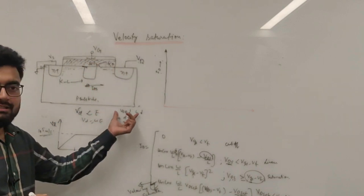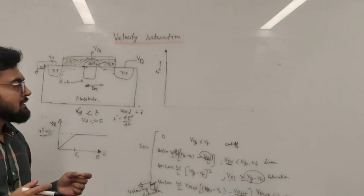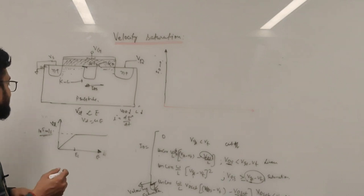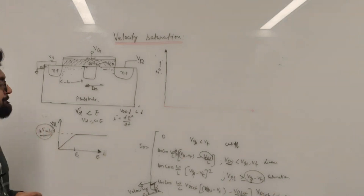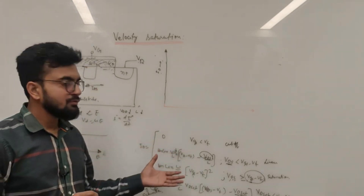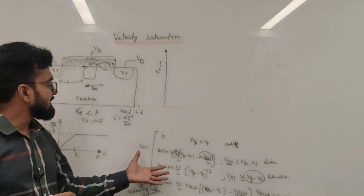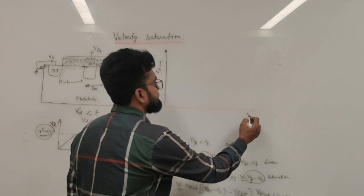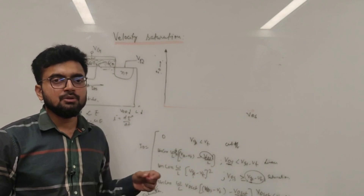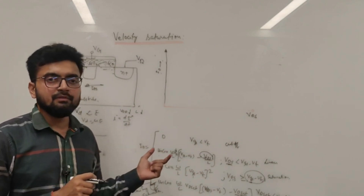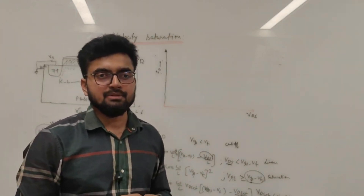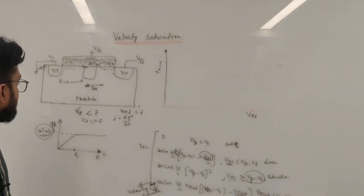Despite this reduction in VDD, we still see that the maximum drift velocity an electron can attain is 10^5 meters per second. If we analyze the drain current equation versus VDS, there is no term that contains drift velocity, so how do we implement the effect of velocity saturation in the drain current equation or output characteristic of the MOSFET?